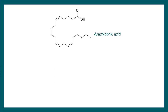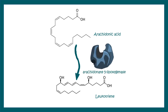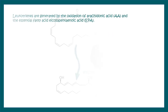Everything starts with arachidonic acid, which is synthesized from plasma membrane phospholipids by the action of specific phospholipase enzymes. Arachidonic acid then gets converted to leukotrienes, and the key enzyme in this process is arachidonate 5-lipoxygenase. This 5-lipoxygenase enzyme is the rate-limiting enzyme here, so it could be used as a target for treating several diseases.